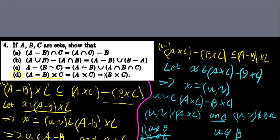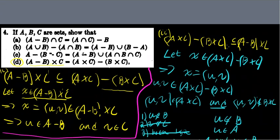We've done it. We've shown that any general element in the right-hand side set A×C - B×C must be in the left-hand side set (A-B)×C, therefore showing that A×C - B×C is a subset of (A-B)×C. We've shown both directions, so we've proven the set equality.